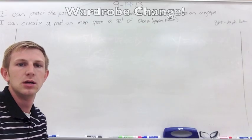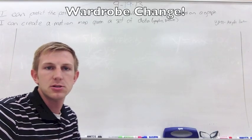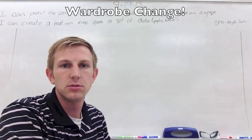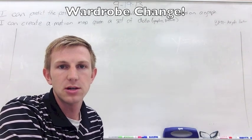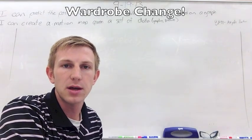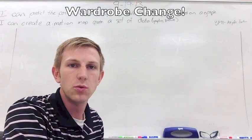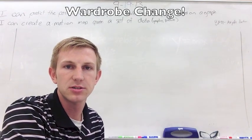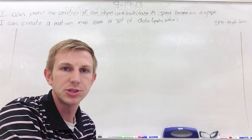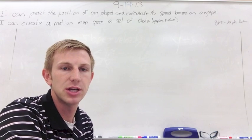So you're going to need a pencil, you're going to need some paper. We're going to make a couple of number lines and I'll teach you how to do this hopefully quickly. Motion maps are going to be a visual way for us to understand the motion of an object.